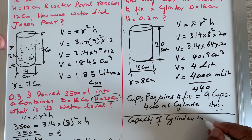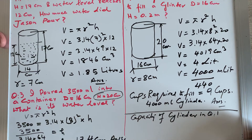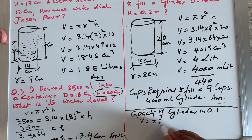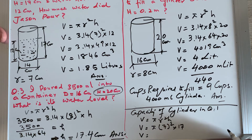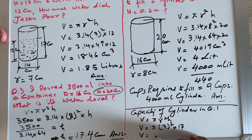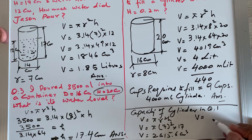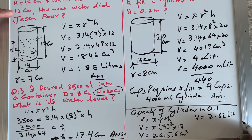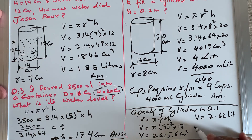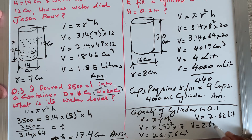In question one, the total capacity of the cylinder uses V = π r² h, with r = 7 and h = 17. That gives 2615.6 centimeters cubed, which equals 2.62 liters. Jason filled the cylinder to the 12 centimeter level, pouring 1.85 liters. So to find how many more liters are required: 2.62 minus 1.85.